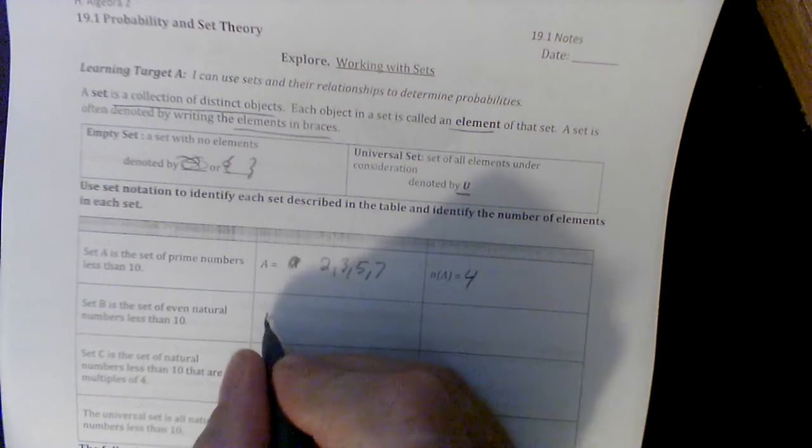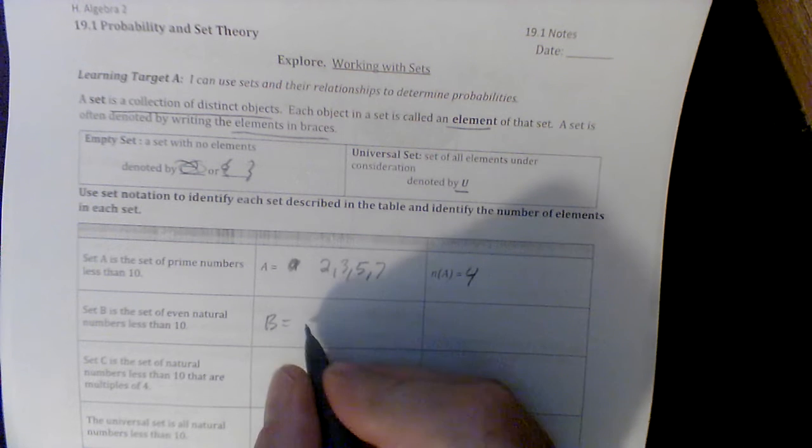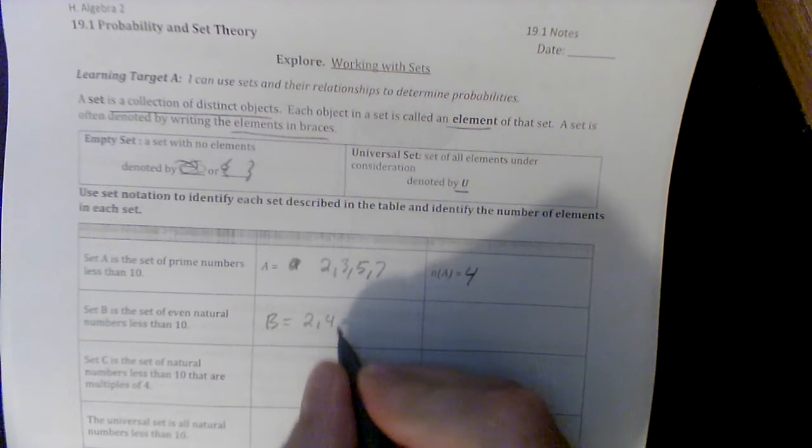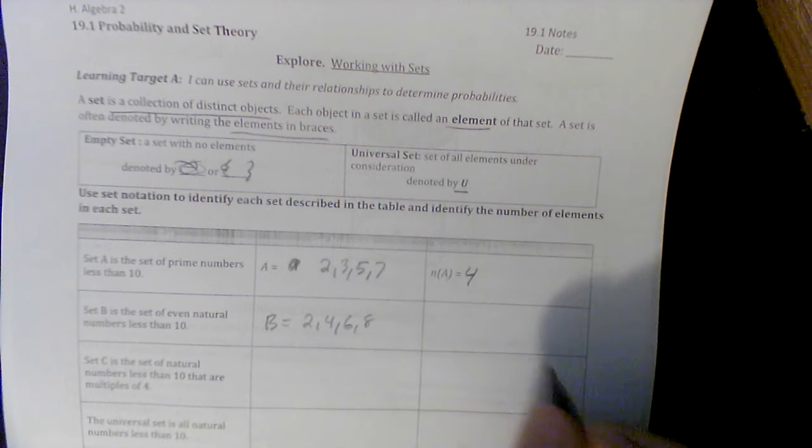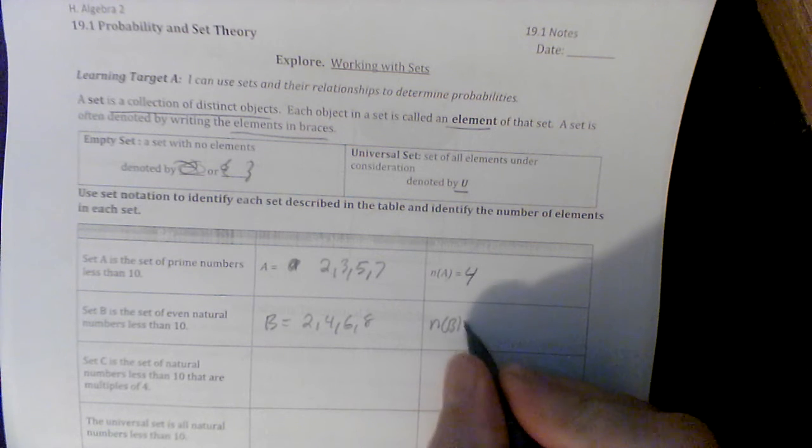Set B is even natural numbers less than 10. So it seems like everything is less than 10. So we got 2, 4, 6, 8 less than 10. And the number in set B is also 4.